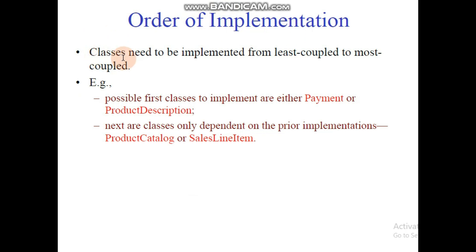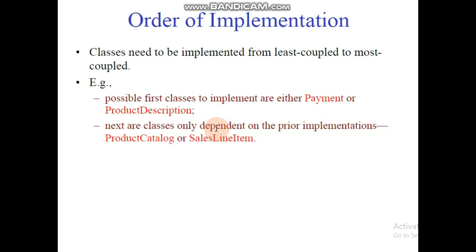Next is order of implementation. Classes need to be implemented from least coupled to most coupled. The possible first classes to implement are either Payment or ProductDescription — these are least coupled. Next classes will only be dependent on the prior implementation. For example, the next classes are ProductCatalog and SalesLineItem, which depend on the prior implementation.